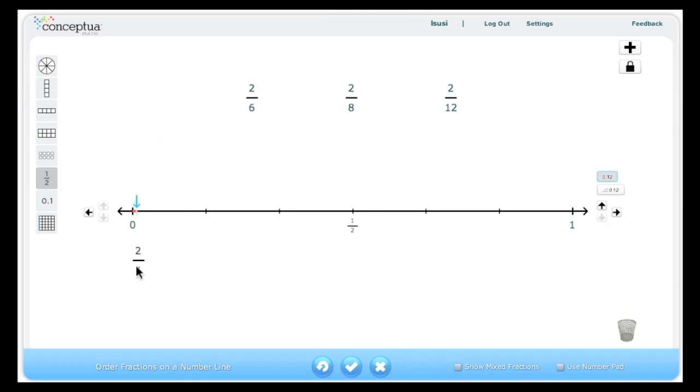Let's do 2 fourths. Notice the red bar as I drag it on the number line, showing the value. I can show students that 2 fourths and 1 half are equivalent fractions and the exact same point on the number line.